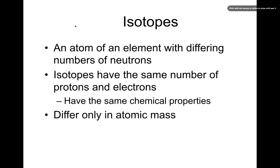An isotope is just another version of the same element. The only difference is the number of neutrons. They still have the same number of protons and electrons — that stays the same in each isotope. They have the same chemical properties because they have the same number of protons and electrons. They only differ in the mass of that isotope.